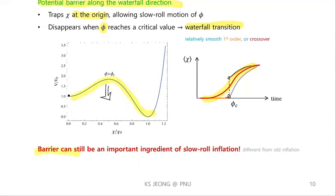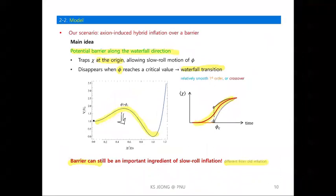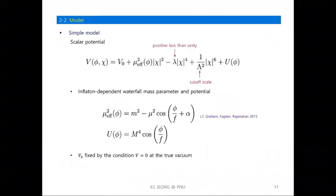The point is that a potential barrier can still be an important ingredient of slow-roll inflation, and the situation is quite different from old inflation. Old inflation means there is a false vacuum and a true vacuum separated by a potential barrier, tunneling occurs, and then inflation is terminated. However, old inflation is not viable — it requires another slow-roll inflation after the tunneling.